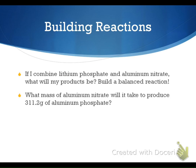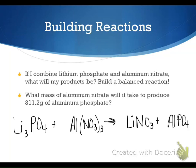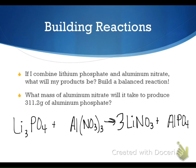Let's try another one. If we combine lithium phosphate and aluminum nitrate, what will the products be? Go ahead and do this one on your own, then we'll start the stoichiometry together. Here are the chemical formulas. We want to balance this equation. Lithium nitrate needs a coefficient of 3, and aluminum phosphate needs no coefficient. Here's our balanced chemical equation.